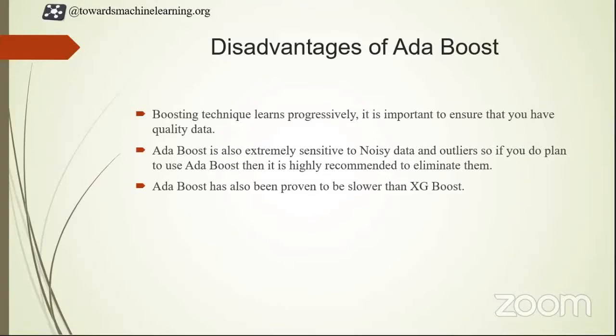AdaBoost is proven to be much slower than XGBoost. XGBoost is the fastest among all boosting algorithms. So AdaBoost is slower than XGBoost — these are some of the disadvantages of AdaBoost.